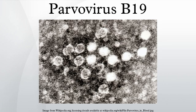B19 virus is most known for causing disease in the paediatric population; however, it can also affect adults. It is the classic cause of the childhood rash called fifth disease, or erythema infectiosum, or slap cheek syndrome. The virus was discovered by chance in 1975 by Australian virologist Yvonne Cossart. It gained its name because it was discovered in well B19 of a large series of microtiter plates labelled in this way.